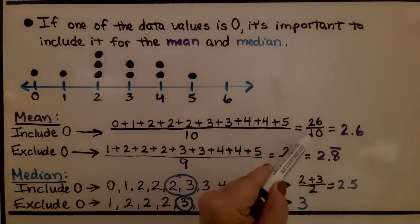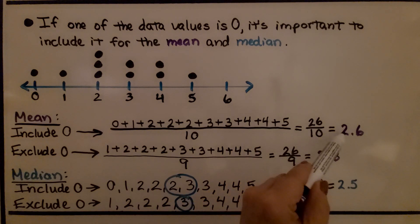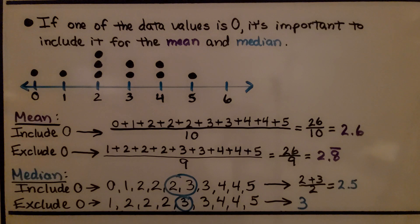We get twenty-six divided by ten, so our mean is 2.6. If we exclude the zero, if we don't count it, we're still going to get twenty-six. But now, because there's one less addend, we're going to be dividing it by nine.